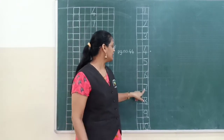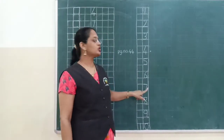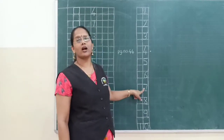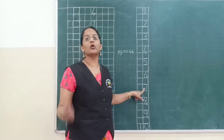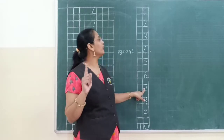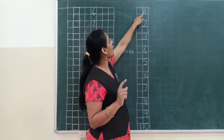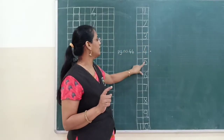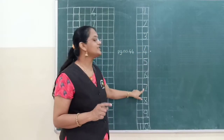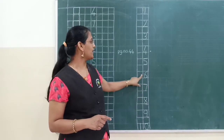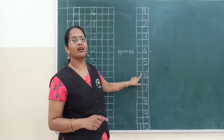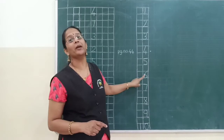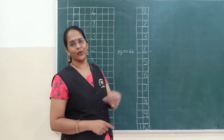Suppose number 7 is there. So 7 ka hame before number chahiye. Hum log kya karenge? Hum log one number se bolenge: 1, 2, 3, 4, 5, 6, 7. So 7 ke pehle kya aaya tha? 6 and then 7. So 6 is the before number.